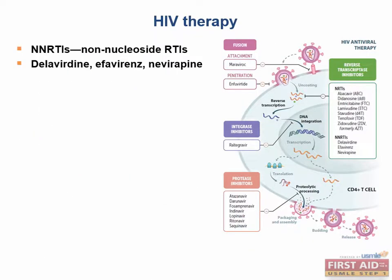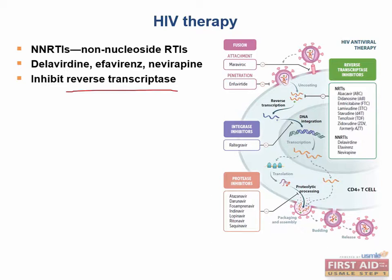The next drugs are the non-nucleoside reverse transcriptase inhibitors, which include delavirdine, efavirenz, and nevirapine. These drugs work by inhibiting the reverse transcriptase enzyme found in HIV. However, they are not nucleoside analogs — they have a different chemical structure and work by a completely different mechanism, binding to a different site on the reverse transcriptase enzyme. Since these aren't nucleoside analogs, they do not require phosphorylation to be active.